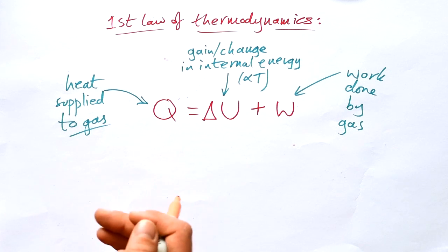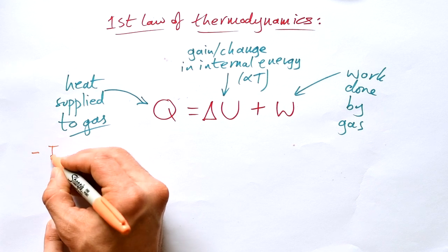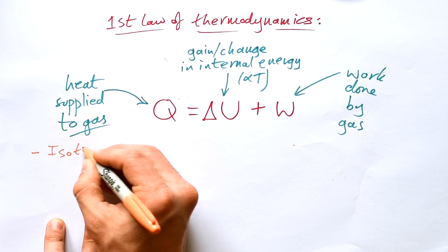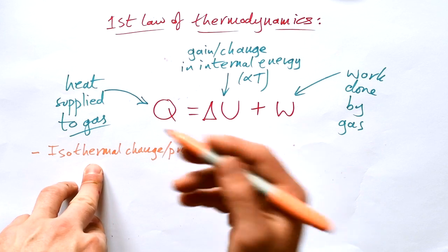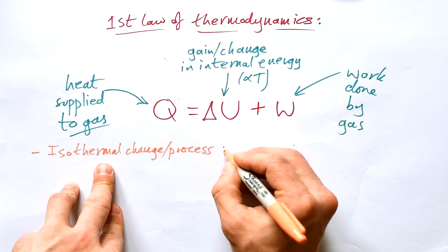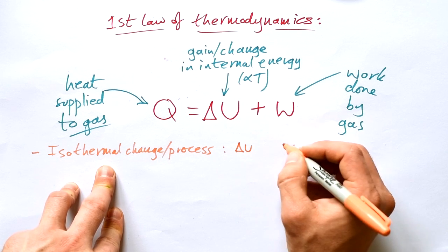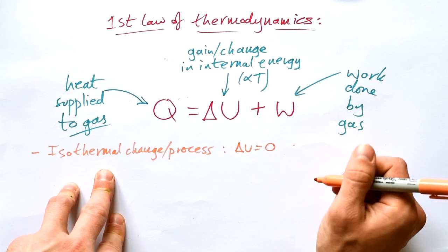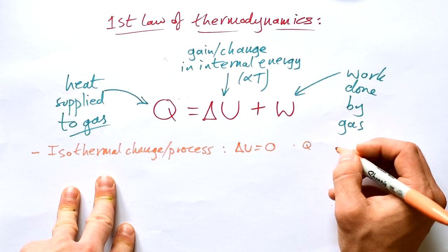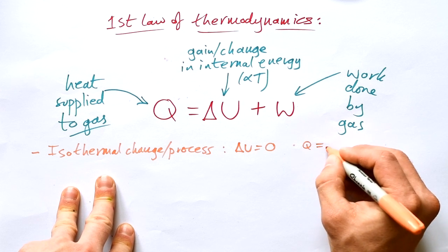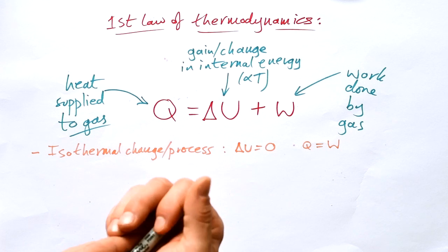Now that might make sense but the difficulty is knowing how to apply that to different situations. Let's think about when a gas undergoes an isothermal change or process. Iso means same, thermal means temperature basically and so in this case if the temperature is staying the same then that means that the internal energy of the gas is not changing at all. So that means that the heat that you are supplying to the gas is all lost by the gas by the work that it does.